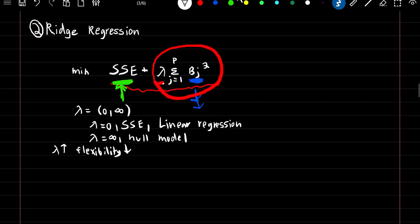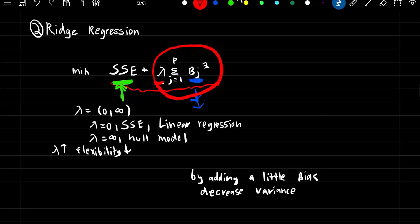So why would we want to increase the sum of squared error? The idea is that by adding a little bias we hope to greatly decrease our variance. By adding this penalty — which is also called the L2 penalty for ridge regression — we're saying that we can lower the flexibility of our linear regression model in the hopes of decreasing the variance more than we add to the bias.